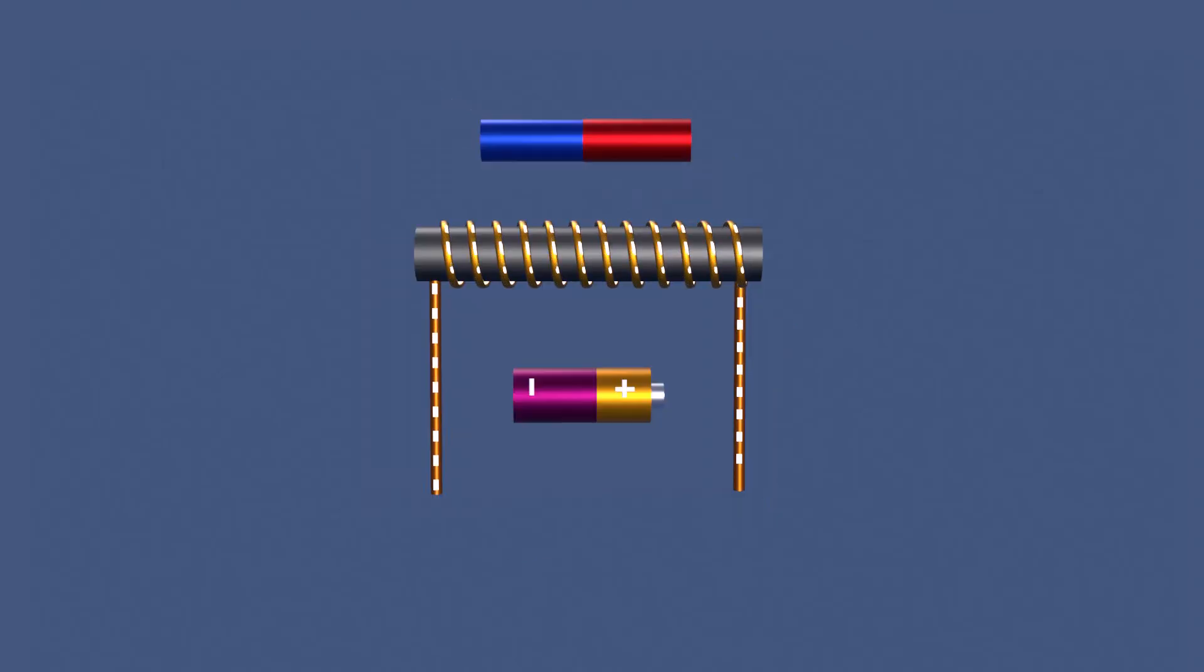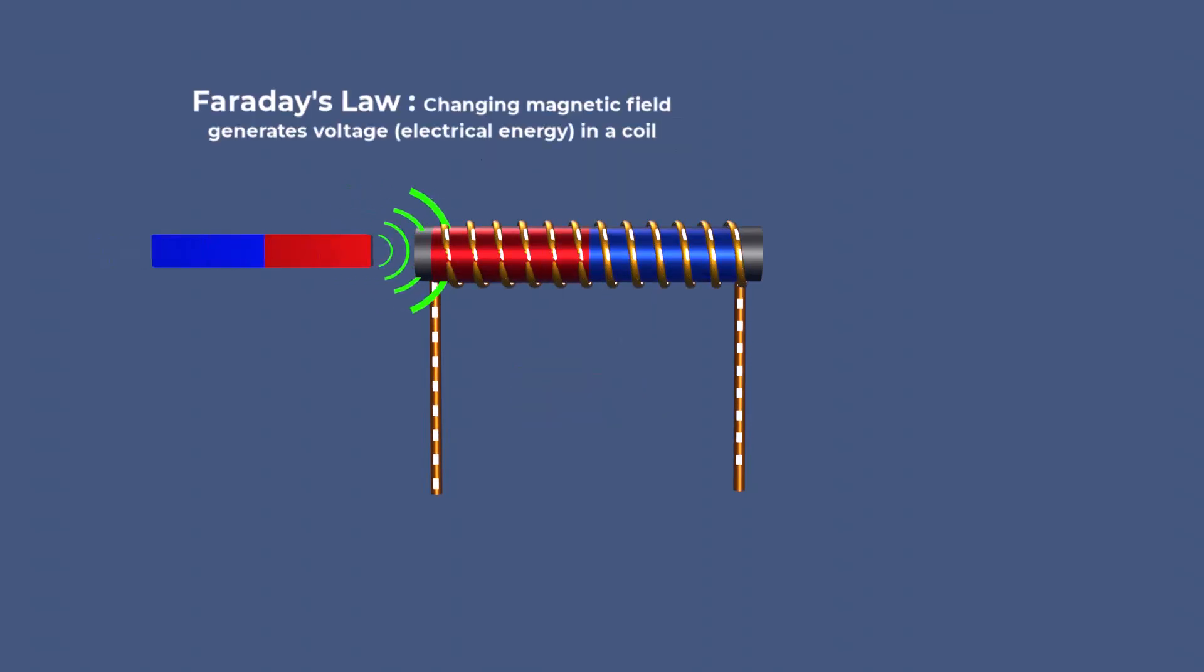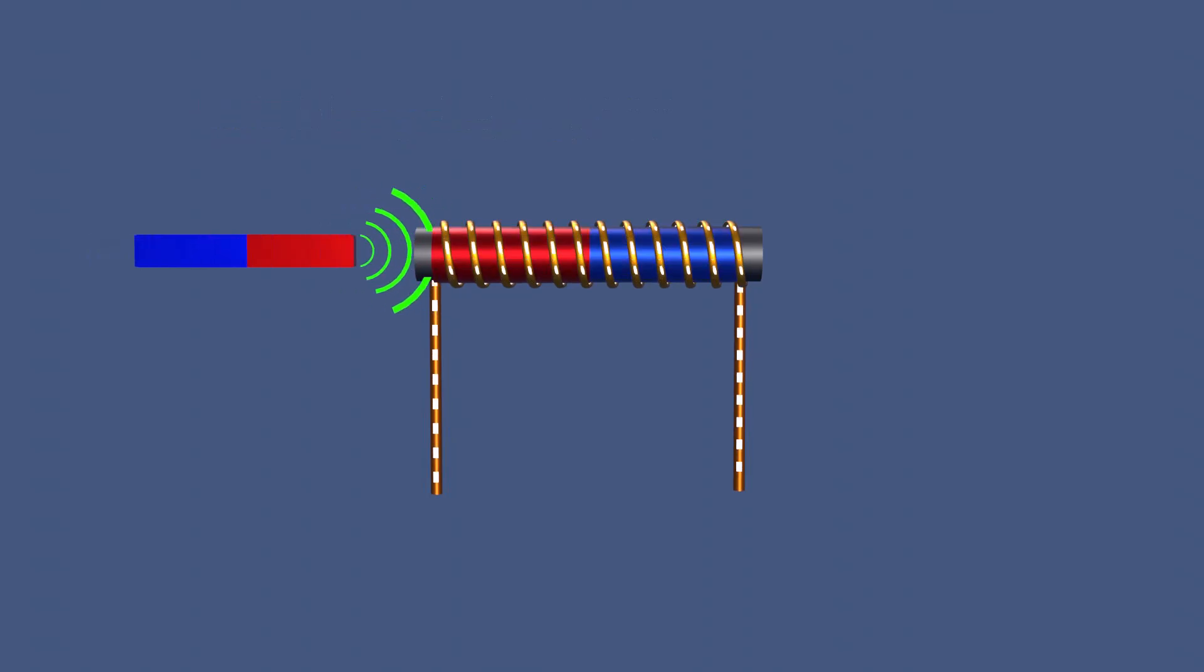One of the fascinating properties of inductors is their ability to convert electrical energy into magnetic energy and reverse this process. According to Faraday's law of electromagnetic induction, a time-varying magnetic field passing through a coil induces a voltage across the coil.